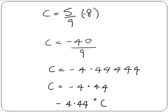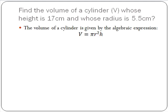Now we will try a second problem. We want to find the volume of a cylinder whose height is 17 cm and whose radius is 5.5 cm. The formula for finding the volume of a cylinder is given by the algebraic expression V equals pi r squared h, where pi is estimated to be 3.14.